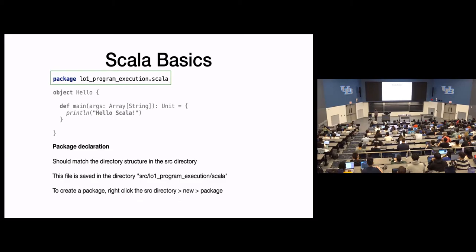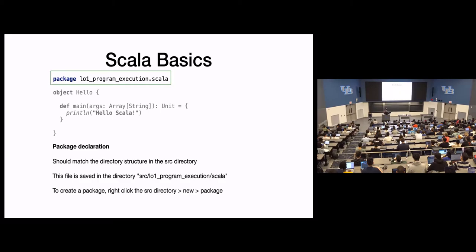First, the package declaration. This is specifying the package of code where this file lives. Basically, this package declaration should match the directory structure of your project. There should be a file named src, then a directory named LO1ProgramExecution, then a directory named Scala, then a file named hello.scala. The package declaration can be thought of as the directory where this file lives. In Java they have to match; in Scala they removed that restriction, but you should still follow it. In the homework assignments, each objective will start with: write this code in this package with this class or object name.